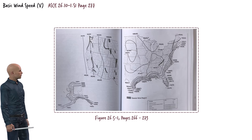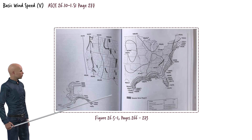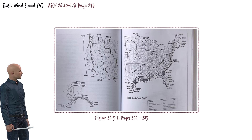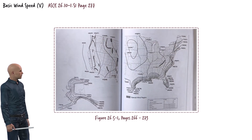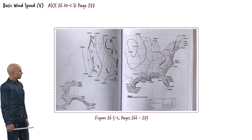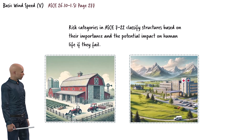Different regions have varying wind speeds due to local climatic conditions. For instance, coastal areas generally experience higher wind speeds thanks to strong ocean winds, while inland areas tend to be calmer. To account for these regional variations and ensure appropriate design, ASCE 7 provides a set of four contour maps. Each map depicts wind speed values for different risk categories. The standard categorizes structures based on the risk they pose to human life if they fail.